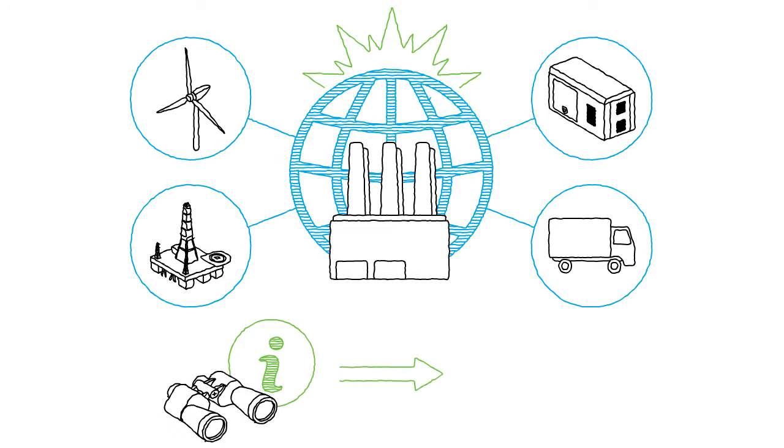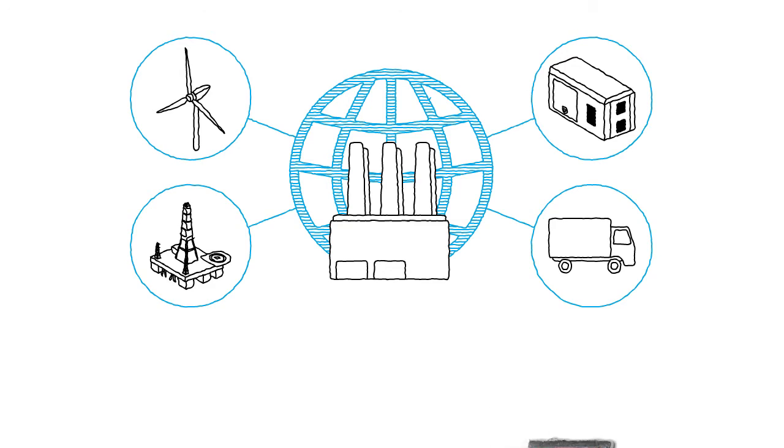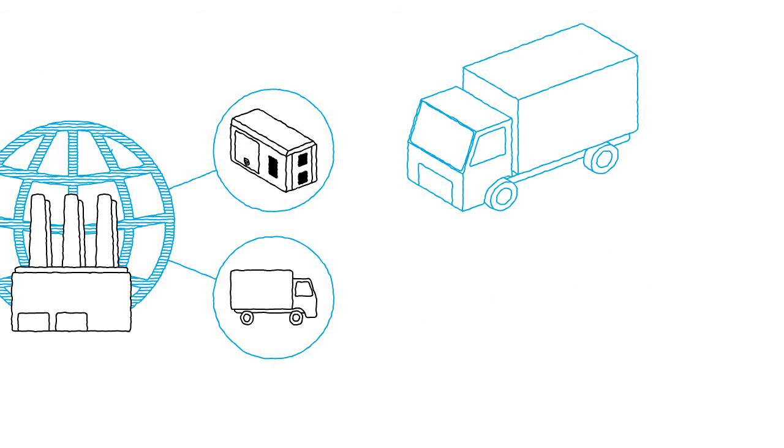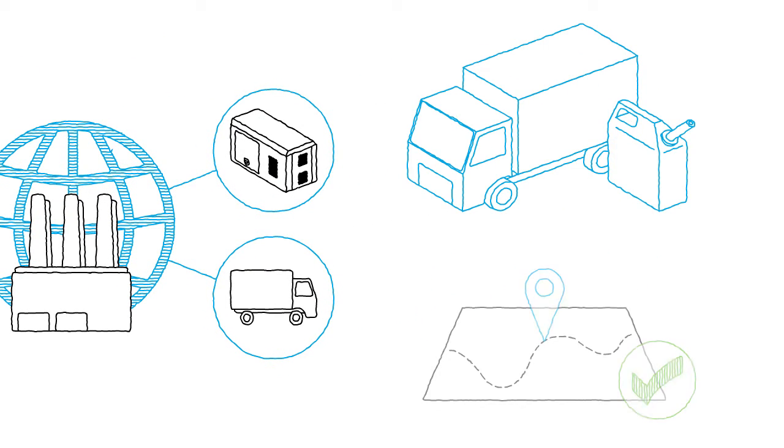IIoT data helps both the users of the cyber-physical assets and the manufacturers of the assets. For example, a logistics company can monitor its delivery truck fleet's fuel usage and optimize routes to reduce fuel consumption.